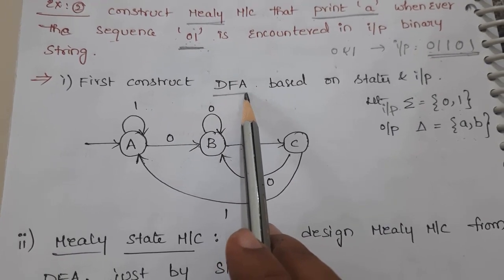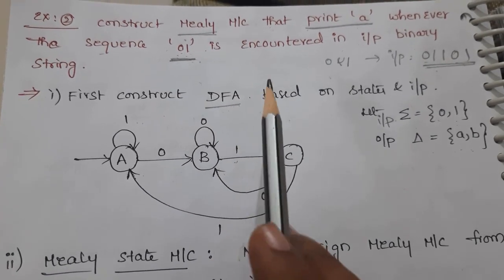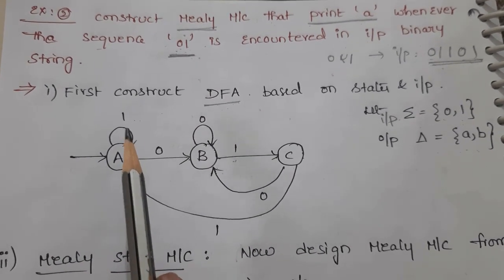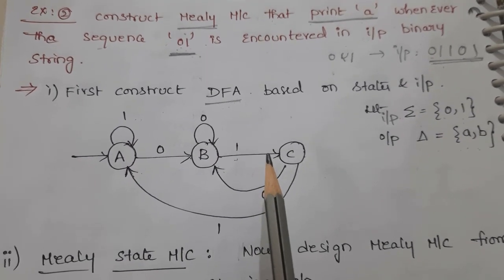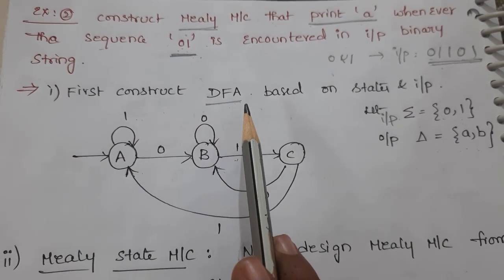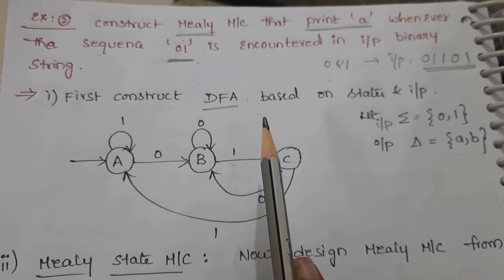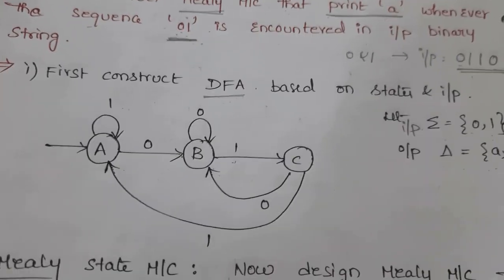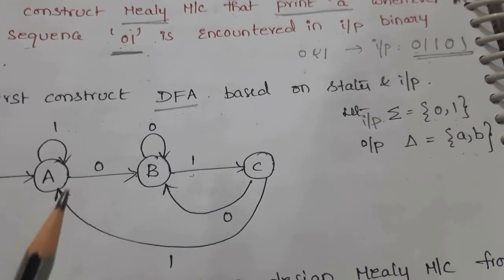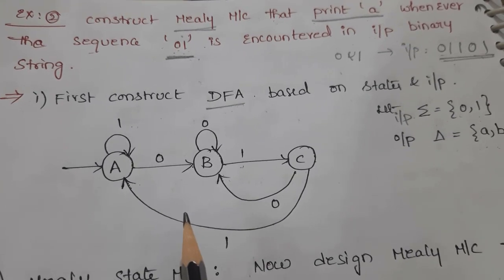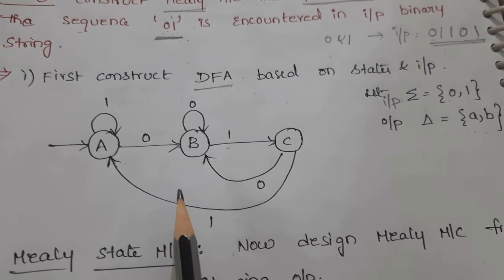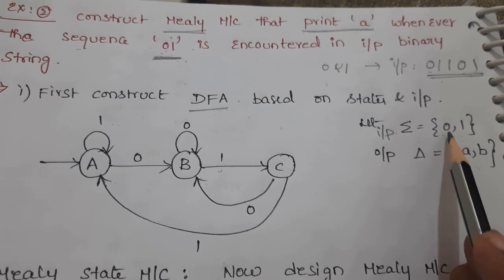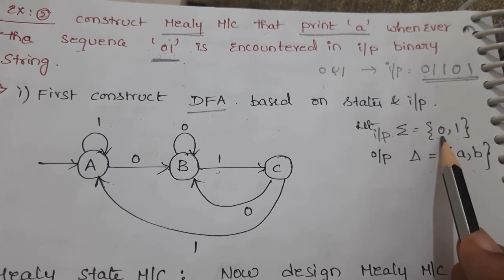A deterministic finite automata is a finite state machine which consists of only states and inputs, but no outputs are represented. First we draw this DFA based on our objective, and then we will represent what outputs we want. The inputs here consist of a binary string, so the input set will be zeros and ones.